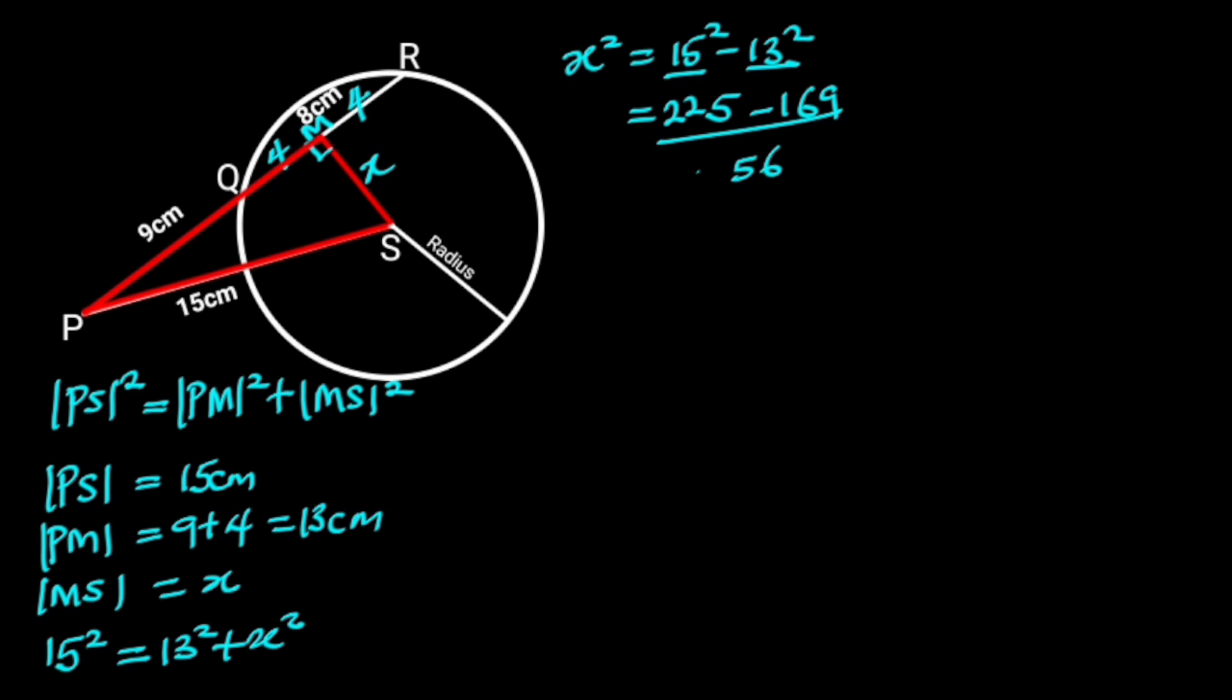So X squared is equal to 56. Taking the square root of both sides will leave us with X is equal to the square root of 56, which is 2 root 14.